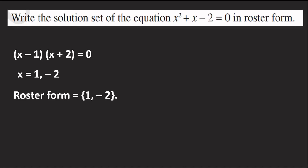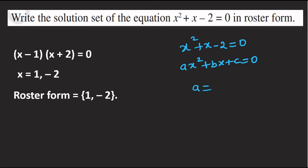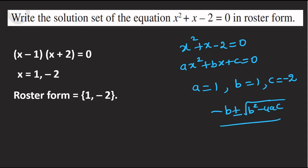Now, if x² + x - 2 = 0, this is a quadratic equation. Using the standard form ax² + bx + c = 0, we compare: a = 1, b = 1, c = -2. The roots are given by x = (-b ± √(b² - 4ac)) / 2a, or you can use factorization.